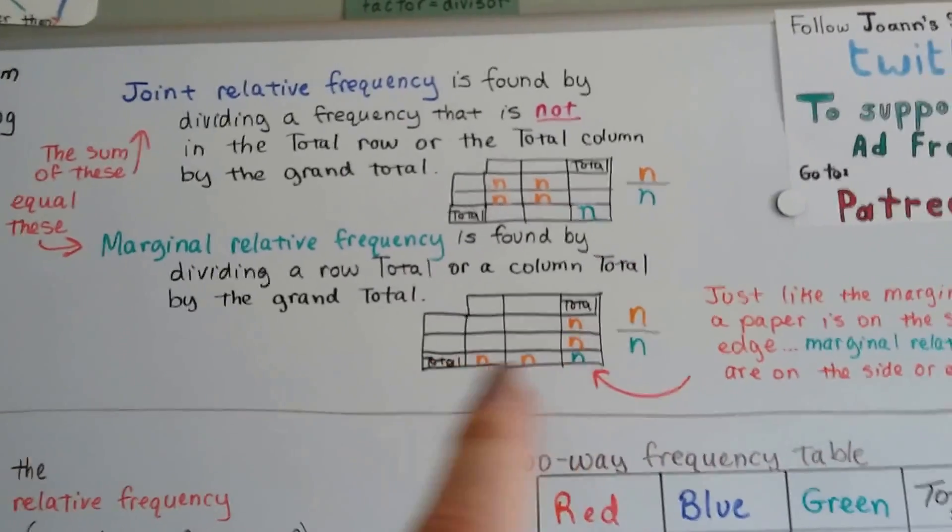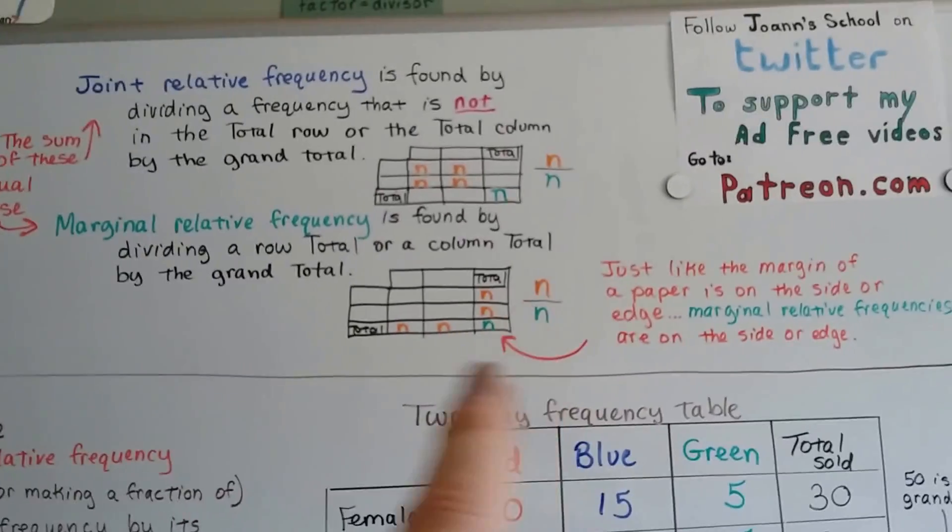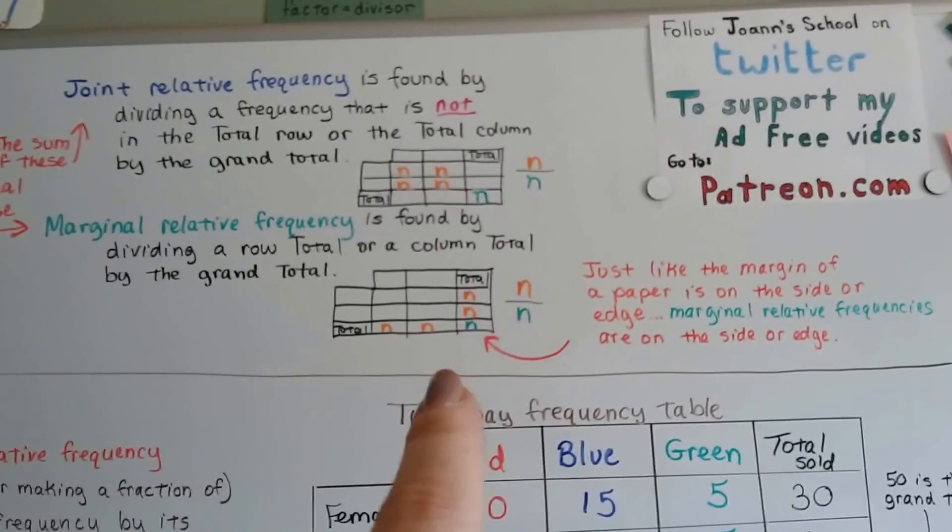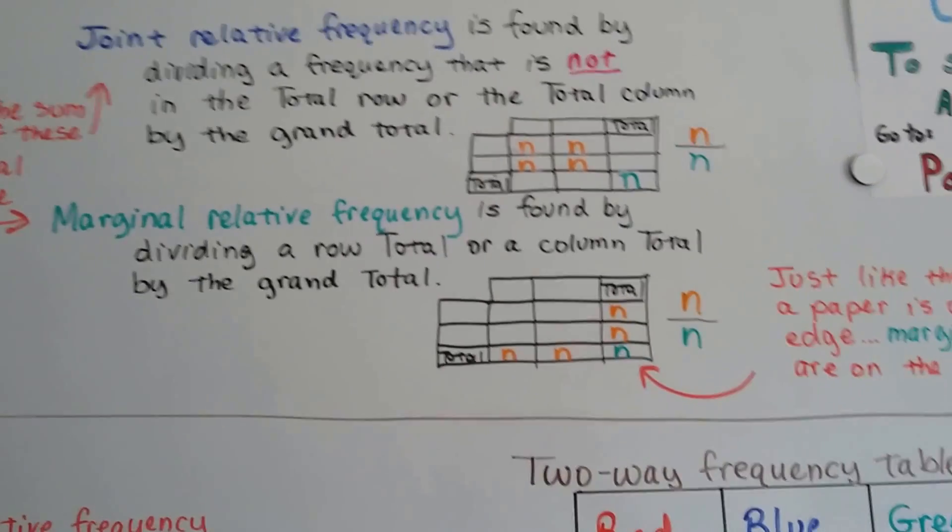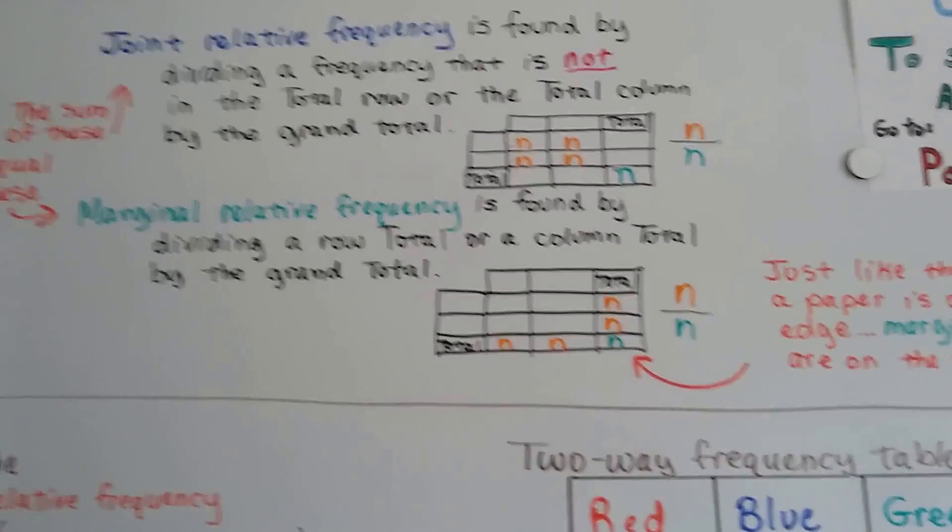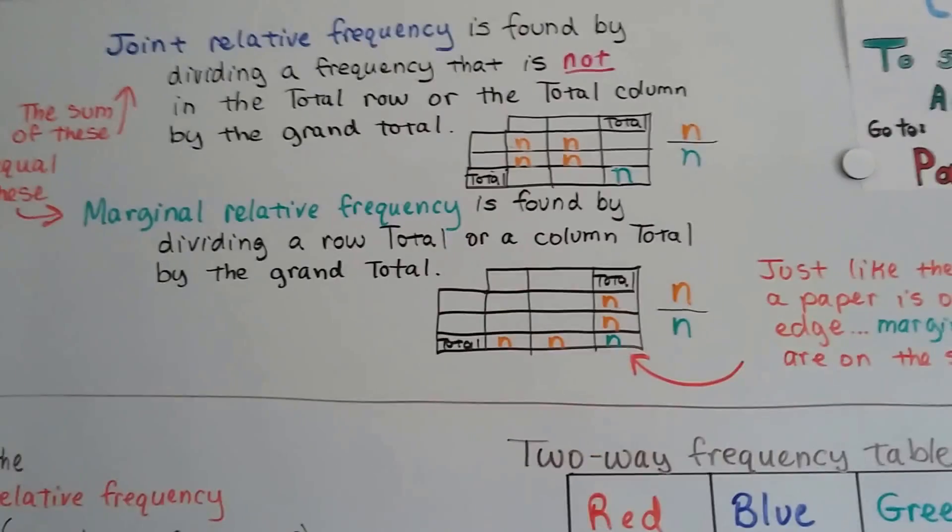And the marginal one, well, they're found along the margins, like on a piece of paper, the margins on the side of the paper. So marginal relative frequencies are found along the edge, along the side there. Along the bottom. They're the totals divided by that grand total.